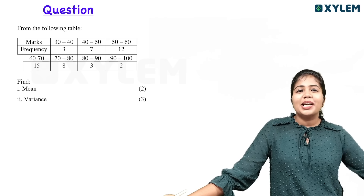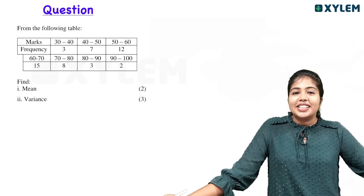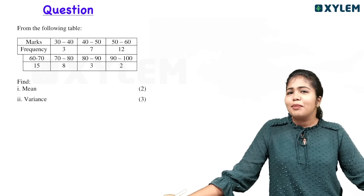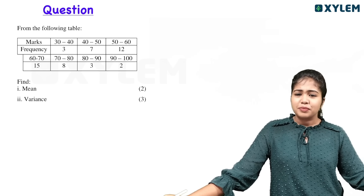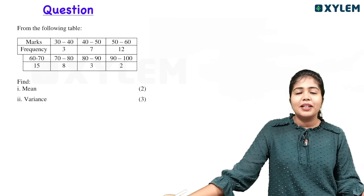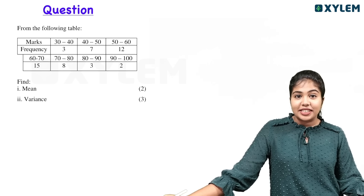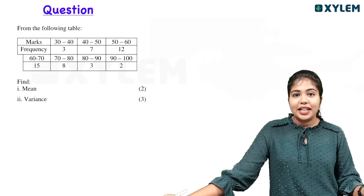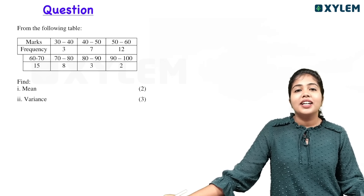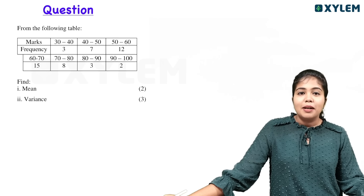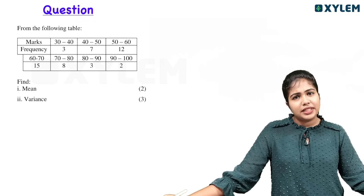We must ask questions about what we have done. We must do tables. Now we have the next thing. In this job, if we have a table, we need a table. Then we need a max frequency.